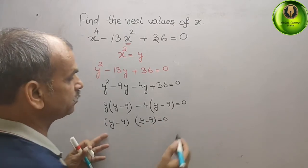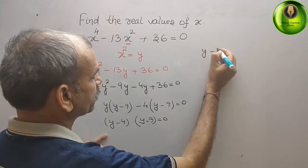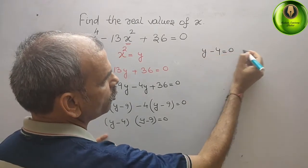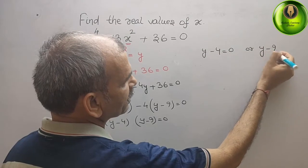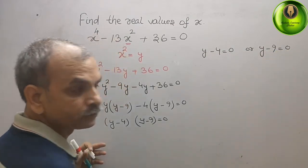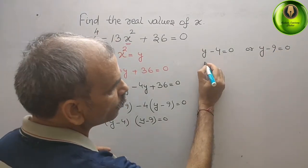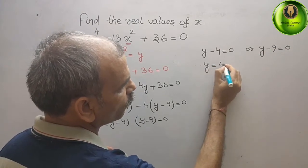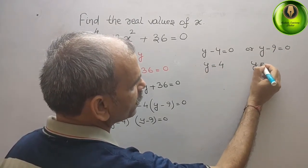That means that y minus 4 is equal to 0, or y minus 9 is equal to 0, which gives you two values of y: y is equal to 4, y is equal to 9.